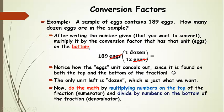We have our 189 eggs written down, and now we choose a conversion factor. The conversion factor we chose has one dozen on top and 12 eggs on the bottom. Why did we choose that one? Because eggs is on the top of our starting fraction and eggs is on the bottom of the conversion factor, so eggs divided by eggs equals one — we can get rid of those two egg units. Now we're left with just dozens, which is the only unit that isn't canceled out.